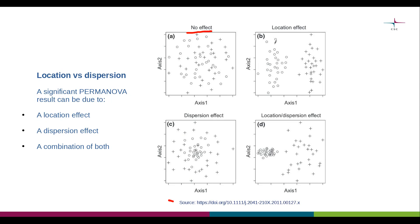On the top right we have a situation involving a location effect. Data points corresponding to one group are visibly separated from the other group in the ordination space — this is what we refer to as a location effect. However, the two groups are very similar in terms of within-sample variation; in other words, there is no dispersion effect.